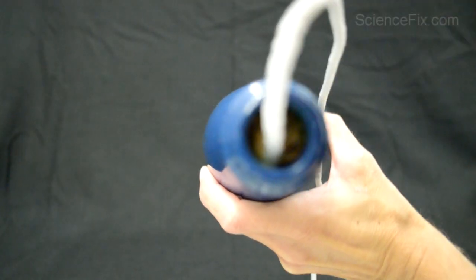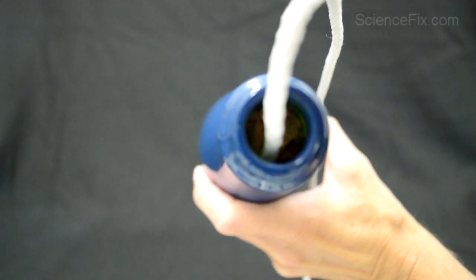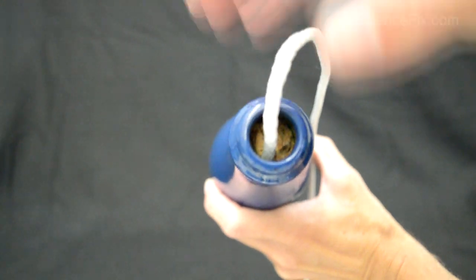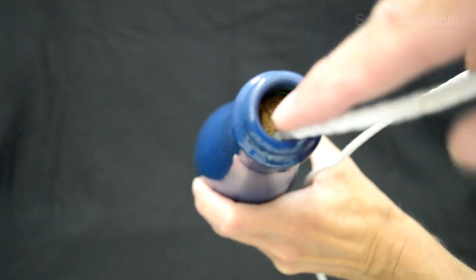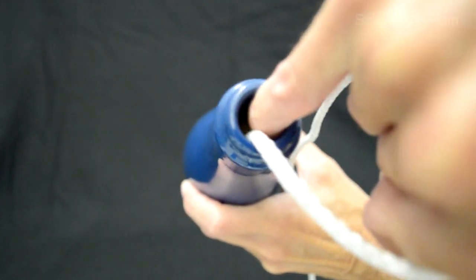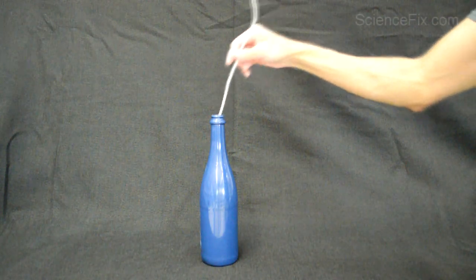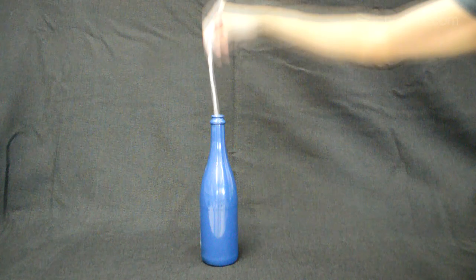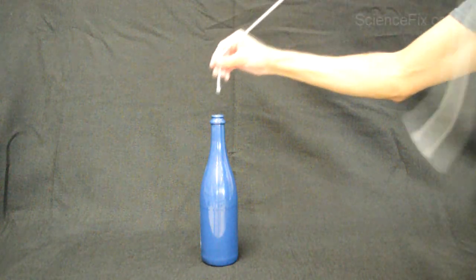You can see that there is a cork that is pushed up against the rope, and the friction between the cork and the rope is what holds the wine bottle up. Part of this trick is to make sure the wine bottle is painted so that you can't see through it at all.